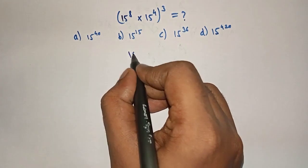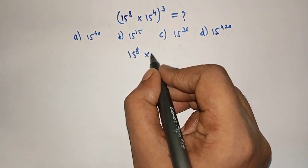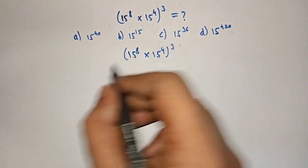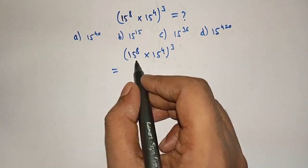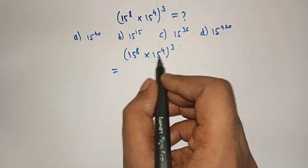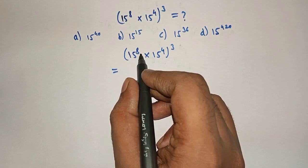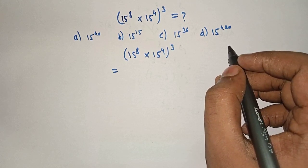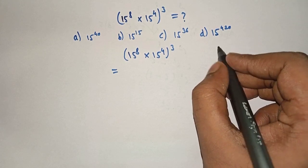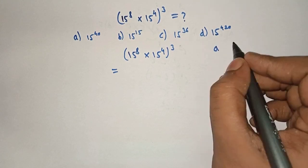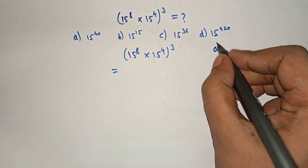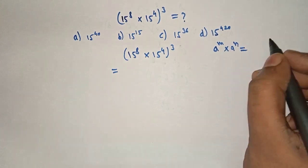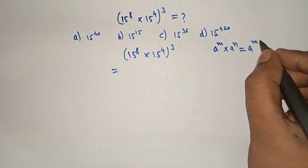So, let's solve. 15 raised to 8 into 15 raised to 4, the whole raised to 3 is equal to. Here, the bases are same. The exponents are different. So, there is one rule: when the bases are same, the exponents can be added.